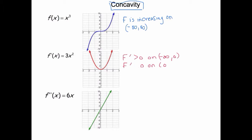F prime is still positive on the interval zero to infinity. And we know that f prime equals zero at x equals zero, but in terms of the vocabulary of increasing and decreasing, that doesn't matter. That just tells us that temporarily the graph flattens out but then continues increasing. This connection between a function's derivative and whether the function is increasing or decreasing is characterized by this relationship — that's not new information.